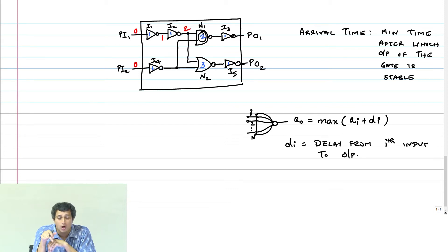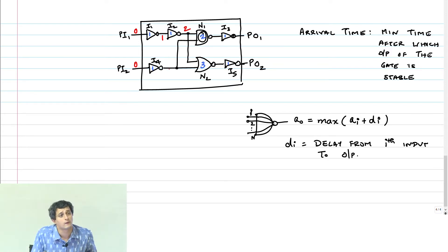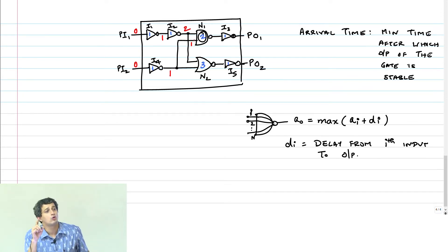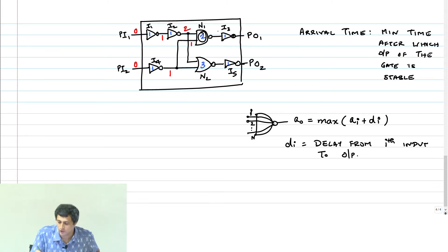The arrival time at N1 depends on when the other input comes. So you have to first solve for I4. The arrival time at the output of I4 is 1, and therefore the arrival time at that node is also 1. Now you have to do max of: arrival time at the first input which is 2 plus 2, and 1 plus 2, and therefore this will be 4.